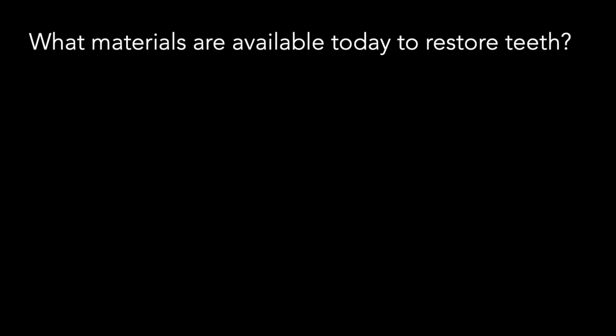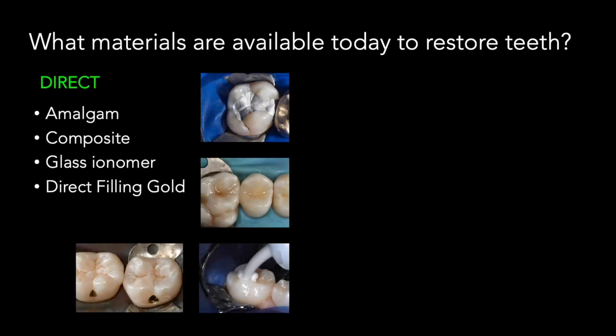Let me explain what we mean in dentistry by direct and indirect restorations. When it comes to direct restorations, we're referring to things like silver fillings, amalgams, or composites. Also other things called glass ionomers, restorations typically used in people that have a very high cavity rate. And then finally we have direct filling gold, also known as gold foil — one of the materials I love to use today.